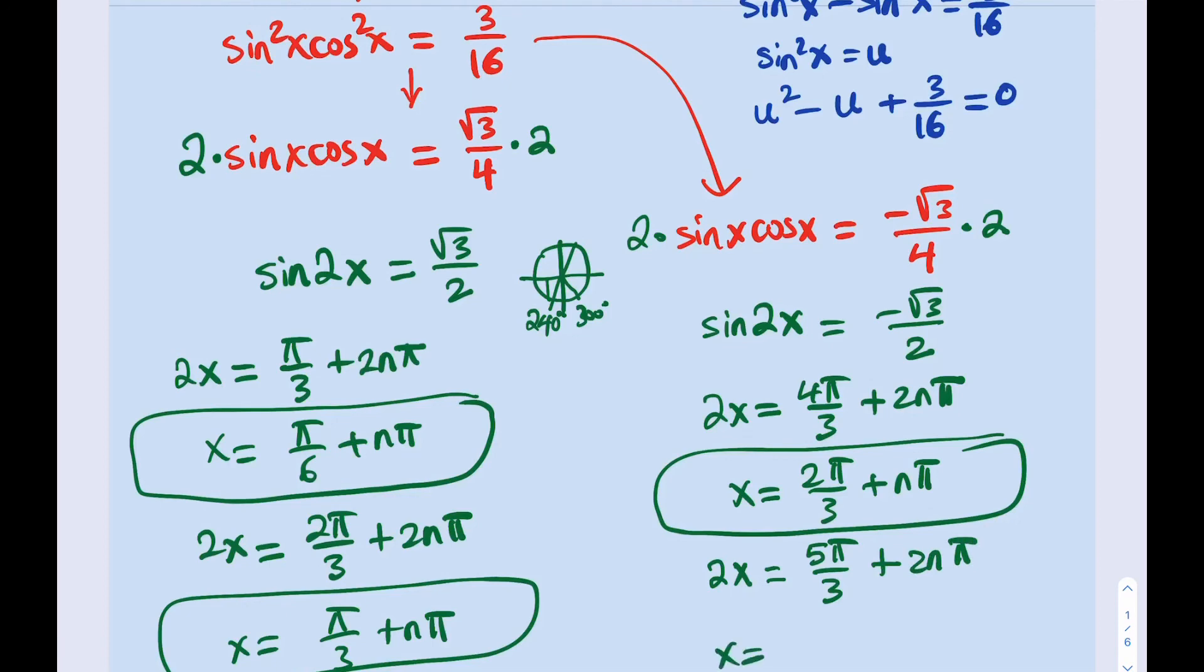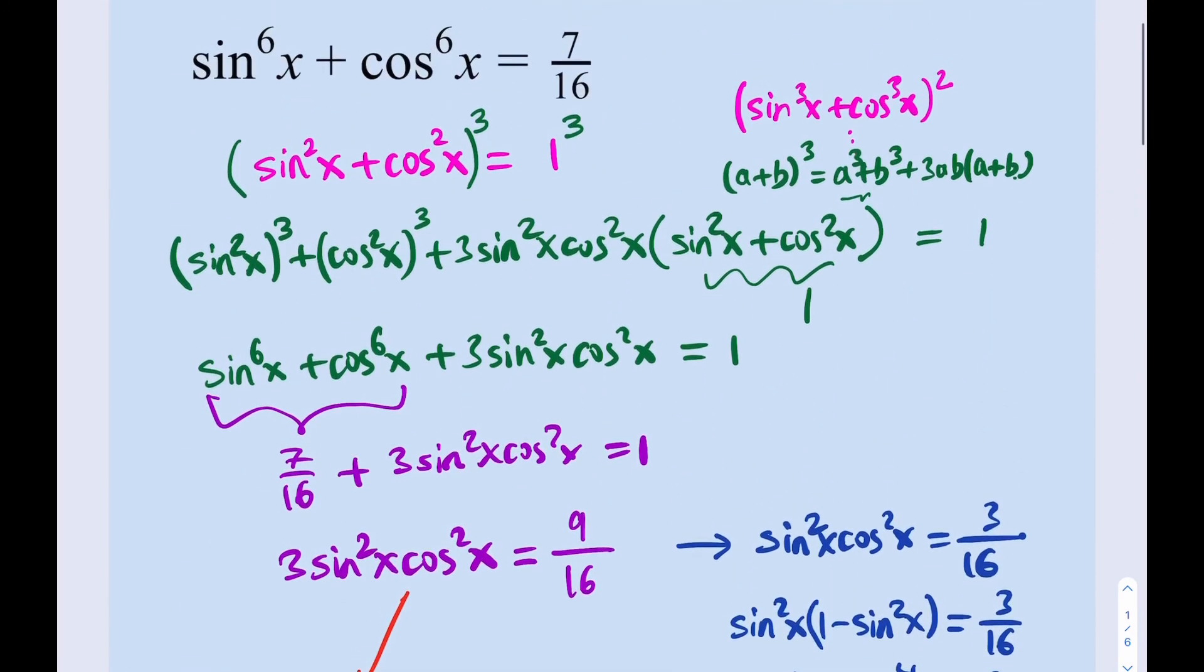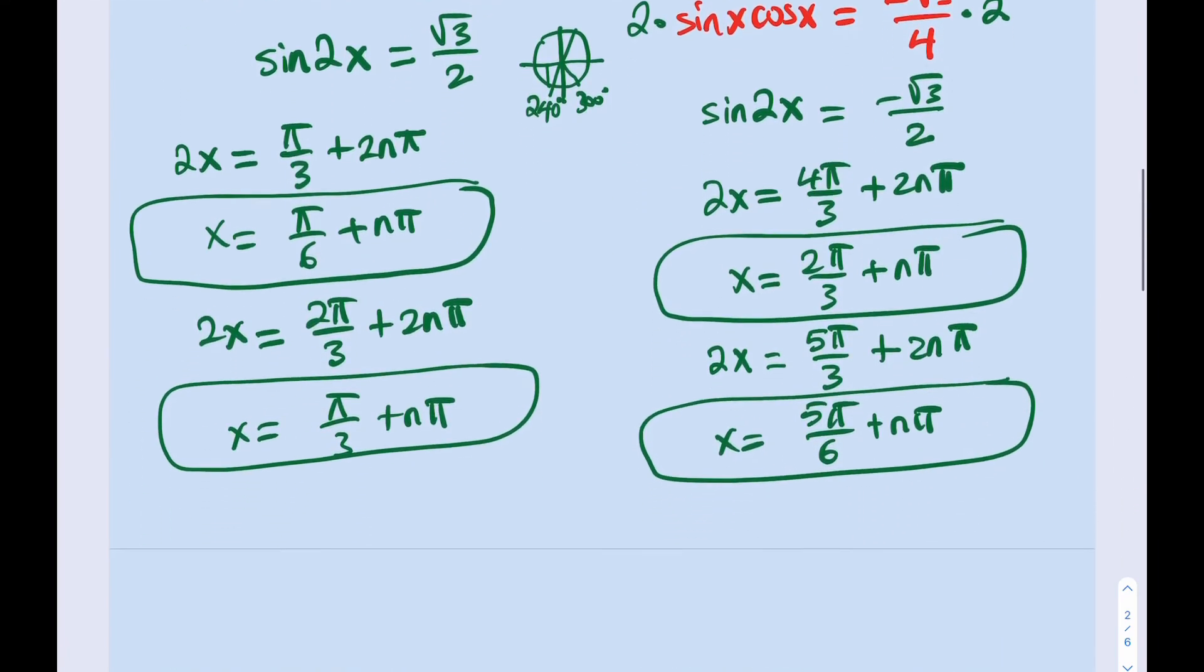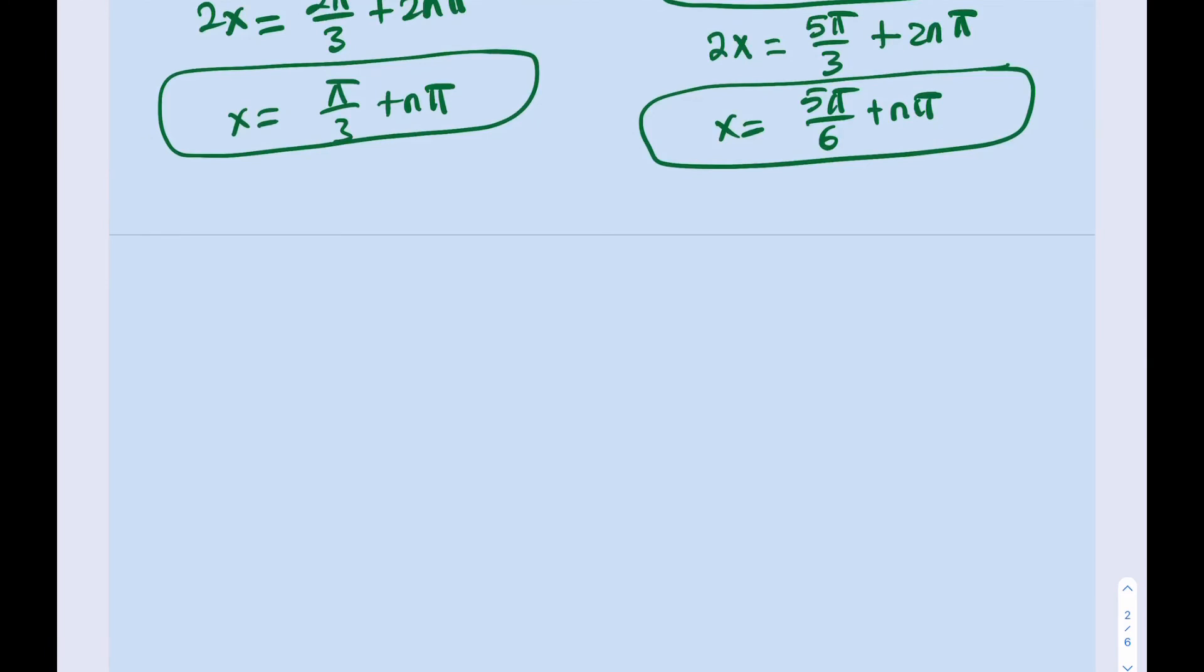So from here, we're going to be getting 5π/6 + nπ. All right. So those are going to be my solutions to the equation, which was given in 6 powers. Sin^6(x) + cos^6(x) = 7/16. All right? Well, that's it for tonight or today. However you want to look at it. I'll see you in the next video. Don't forget to comment, like, and subscribe. And take care.